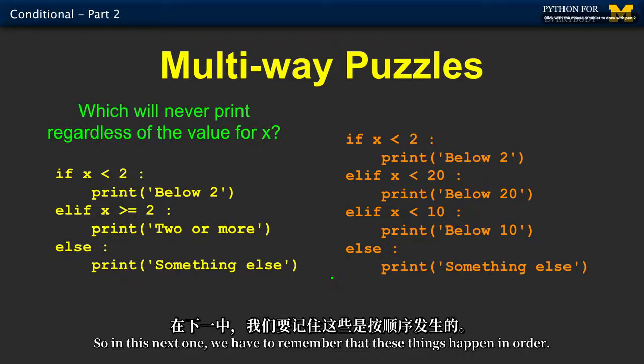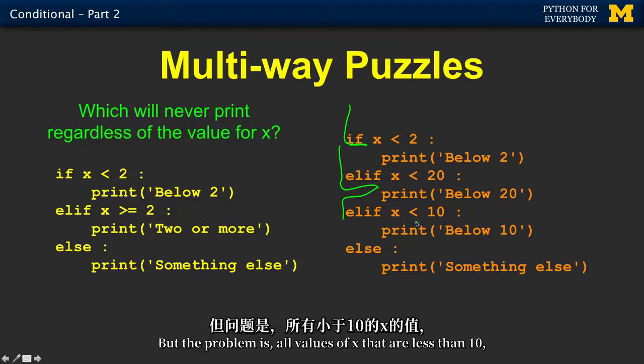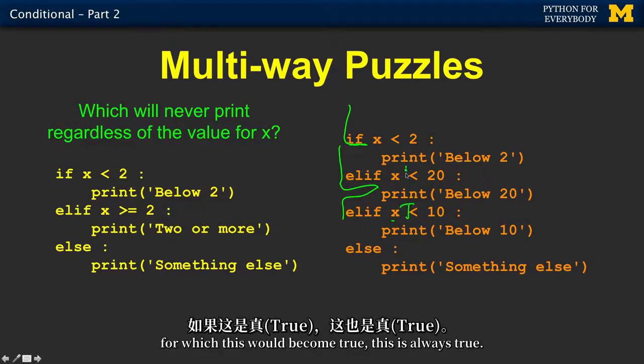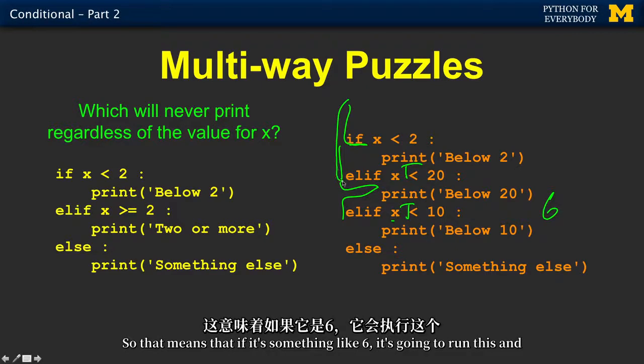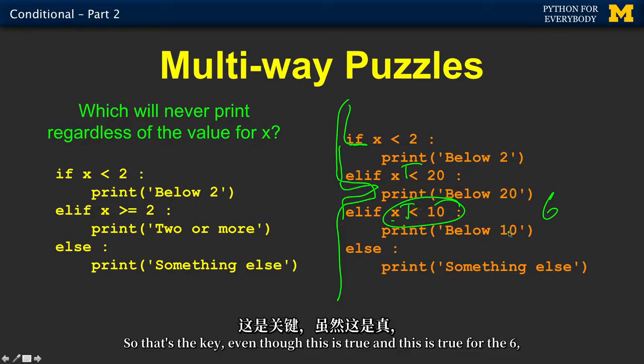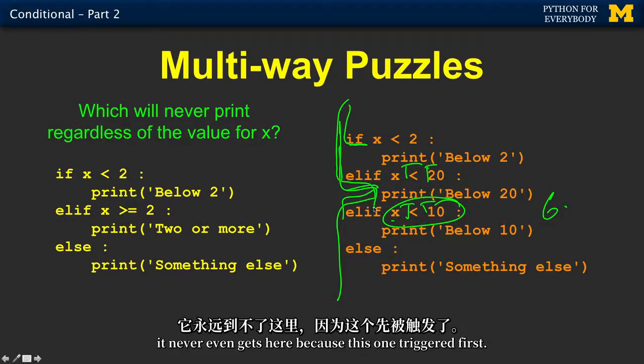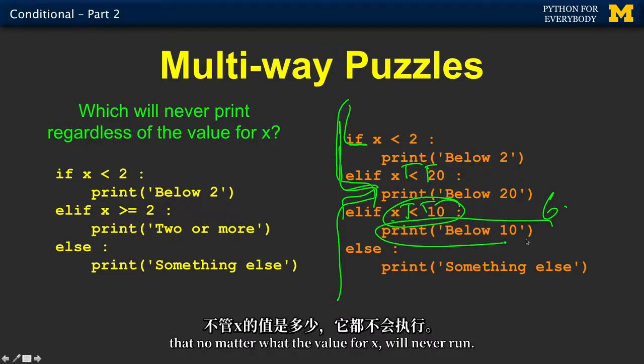In this next one, we have to remember that these things happen in order. So if x is less than 2, we're going to run this. If it's less than 20, we're going to run this. If it's less than 10, we're going to run this. But the problem is, all values of x that are less than 10, for which this would become true, this is always true. So a value like 6, this becomes true, so it's going to run this and come out and never ask this question. Even though this is true and this is true for the 6, it never even gets here because this one triggered first.